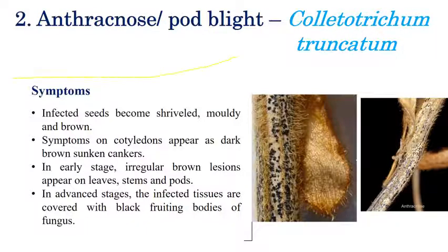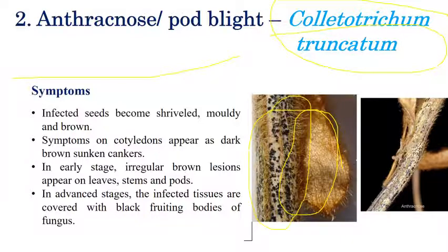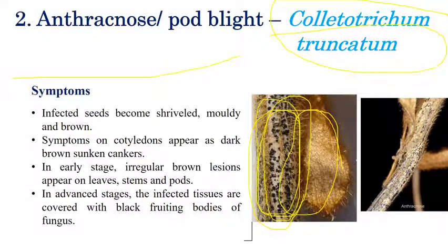The second disease is Anthracnose or Pod Blight, caused by Colletotrichum truncatum. Symptoms are mainly seen on the pod region and inflorescence region. Infected seeds become shriveled and mouldy growth can be clearly observed. Anthracnose symptoms are also observed on the stem and cotyledon. Brown coloured sunken spots appear in irregular stages on pods and leaves. In later stages, infected tissues can be entirely covered with black coloured fruiting bodies or masses of mycelium.